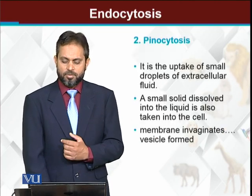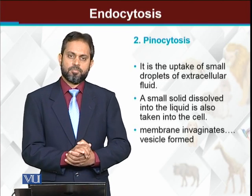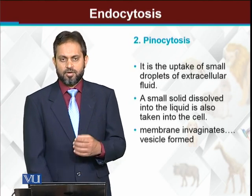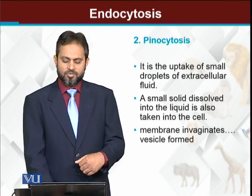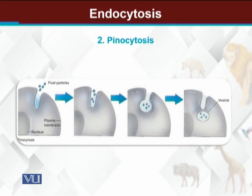اگر material liquid form میں ہے تو liquid form میں جب material کو intake کیا جائے گا تو that will be called pinocytosis. جیسے یہ cell کی طرف قریب آئیں گے، cell ایک invagination بنائے گا — اندر کی طرف ایک depression۔ جیسے molecules اس invagination کے اندر آ جاتے ہیں، cell اس invagination کو cover کرتے ہوئے ایک vesicle بنا دیتا ہے اور یہ vesicle cell کے اندر آ جاتا ہے جہاں اس کو digest کر لیا جاتا ہے۔